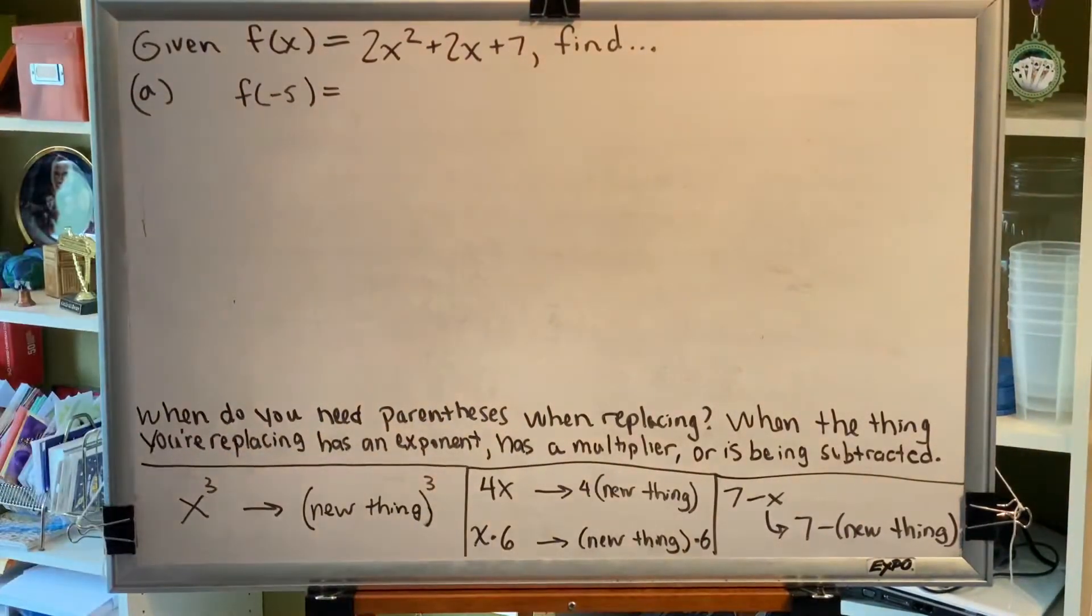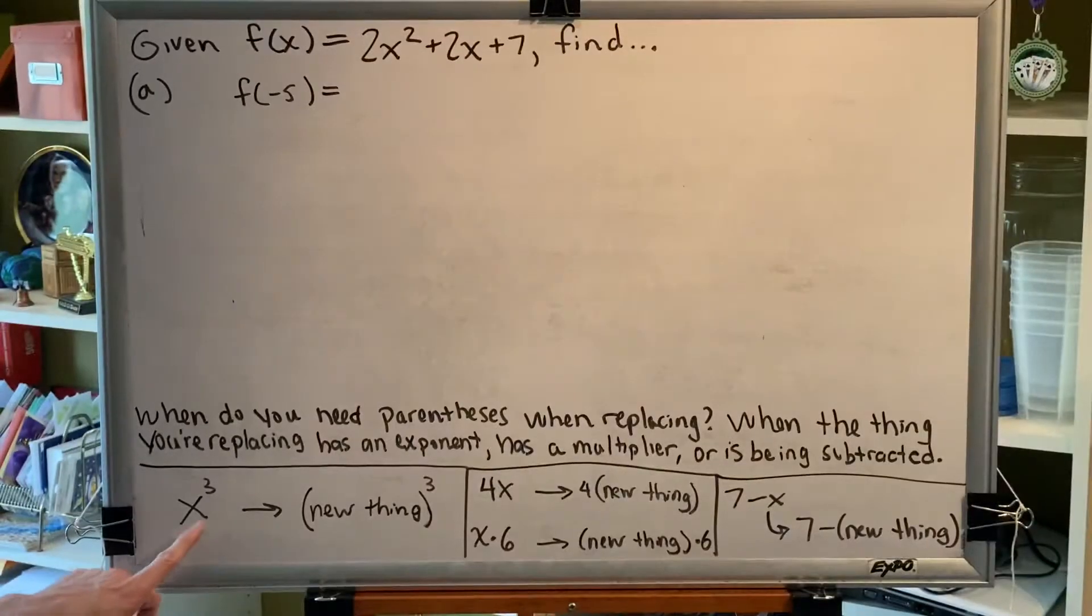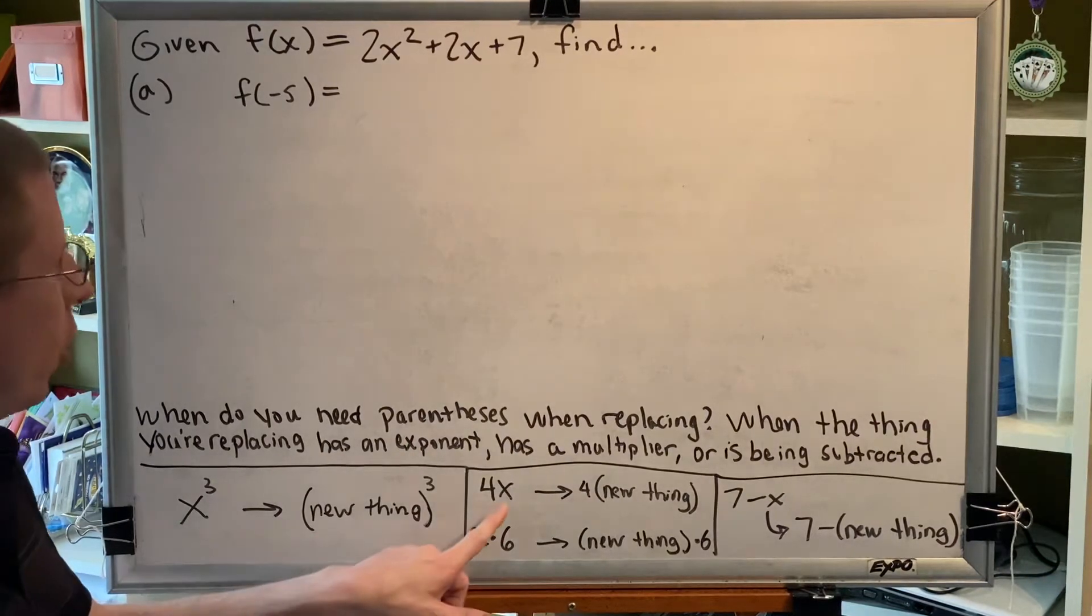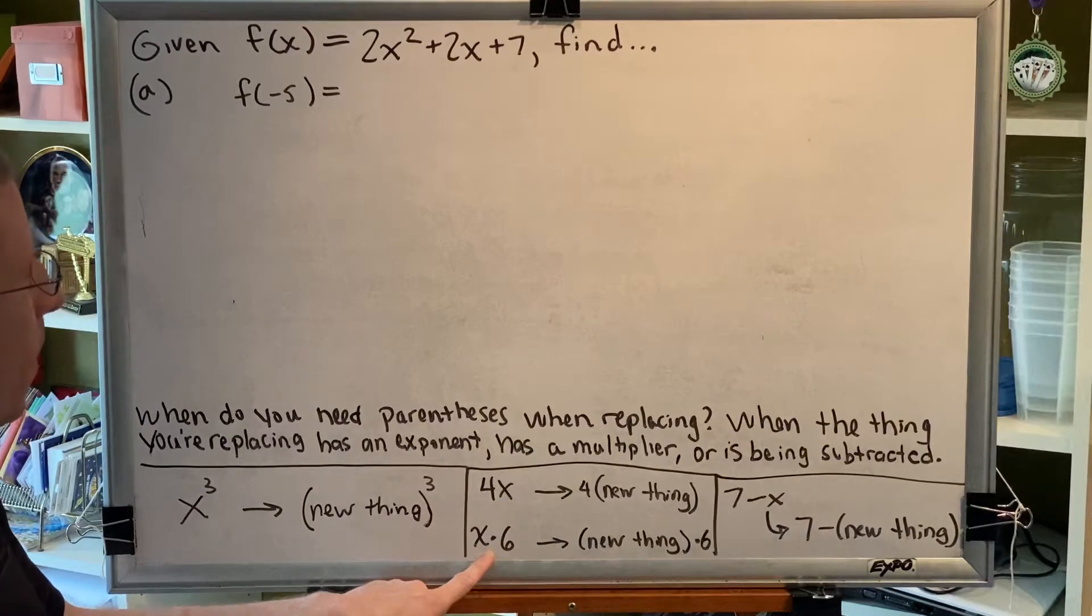Let's look at an example of each one. If you're going to replace this x with a new thing, because the x has an exponent, then the new thing must be put in parentheses. If you're going to replace the x in 4x, or the x in x times 6 with a new thing,